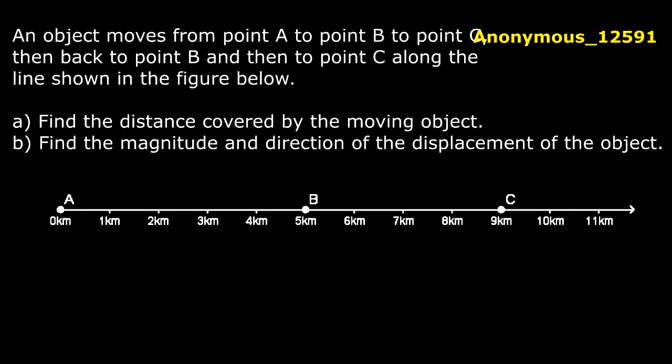The second question is: find the magnitude and direction of the displacement of the object. In this question it is not coming back to directly A, so distance and displacement will be the same. We got 9 kilometers, and as far as direction goes, it is towards east.